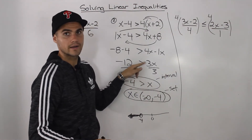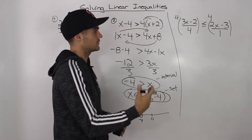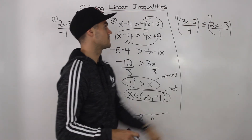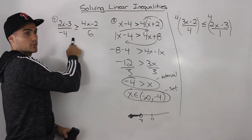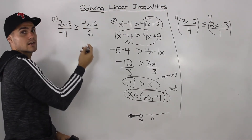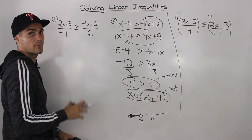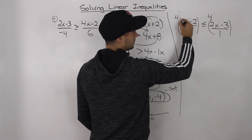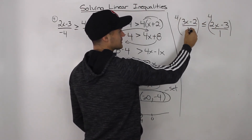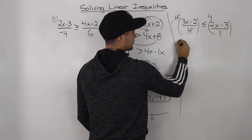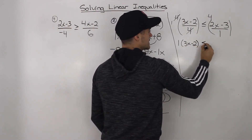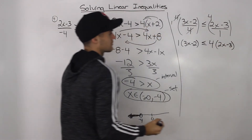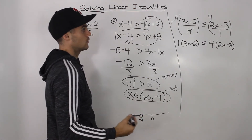Notice we're multiplying by a positive value, so we don't have to worry about flipping the sign. If you remember, when you divide by a negative value you have to flip the sign, and also if you multiply by a negative value you also have to flip the sign. My recommendation is to always multiply by a positive number when working with inequalities. When we multiply all terms by the lowest common denominator of 4, how many times does 4 go into 4? Just once. So we'd have 1 bracket 3x minus 2 is less than or equal to 4 bracket 2x minus 3. Now we just solve this like a regular inequality.